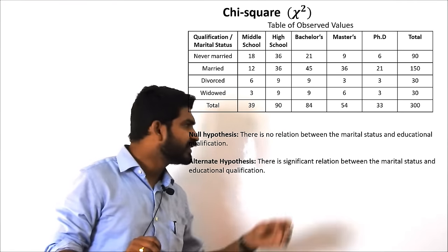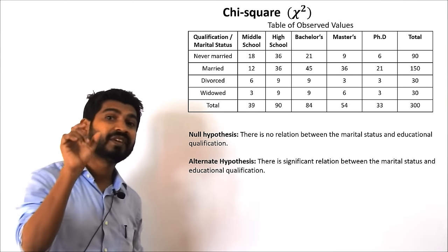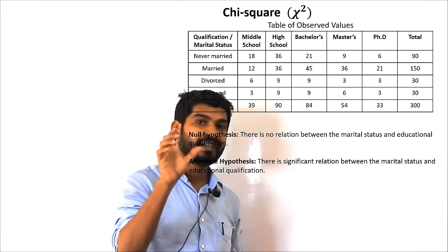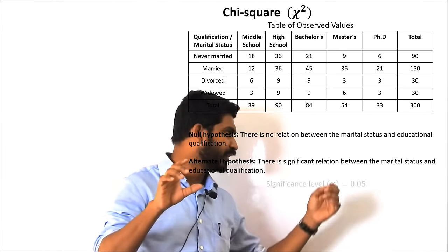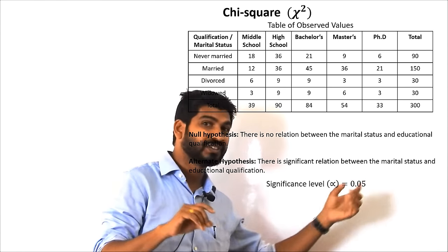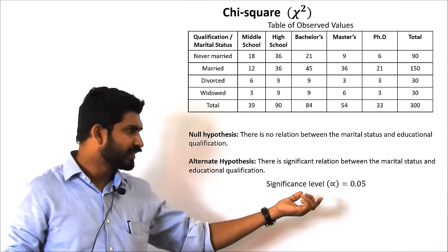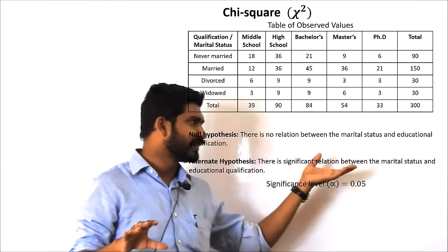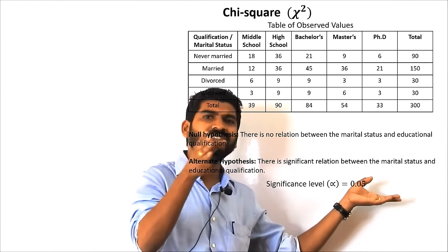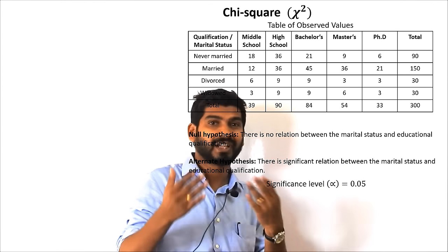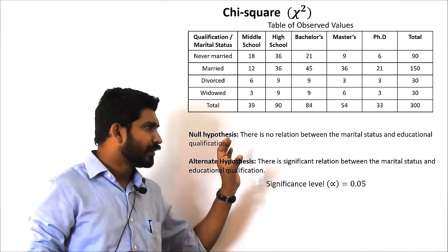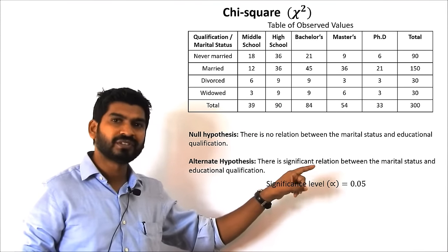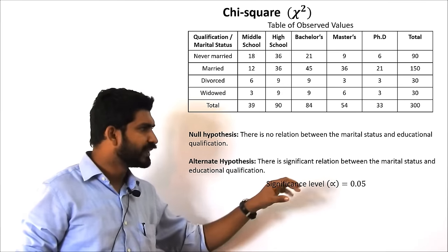The significance level needs to be defined. The significance level can be taken as 0.05, which is 5 percent deviation from the mean, or we can say 0.01. Usually the significance level is taken as 0.05. There are different significance levels taken for different types of observations, but generally the significance level is taken as 5 percent, that is 0.05. So we will go with that.